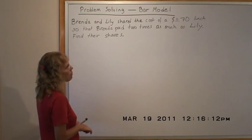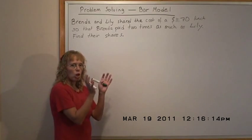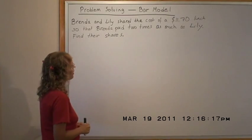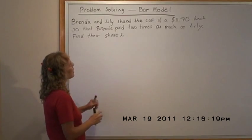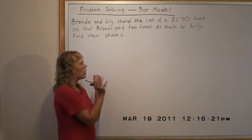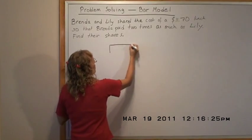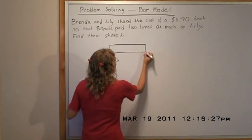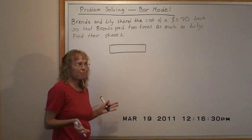Now in the bar model we always have a whole thing and then parts. The whole thing here we would see as the whole lunch — the whole lunch is the whole thing. I'll draw it here as a bar. We divide it into parts, but how many parts?